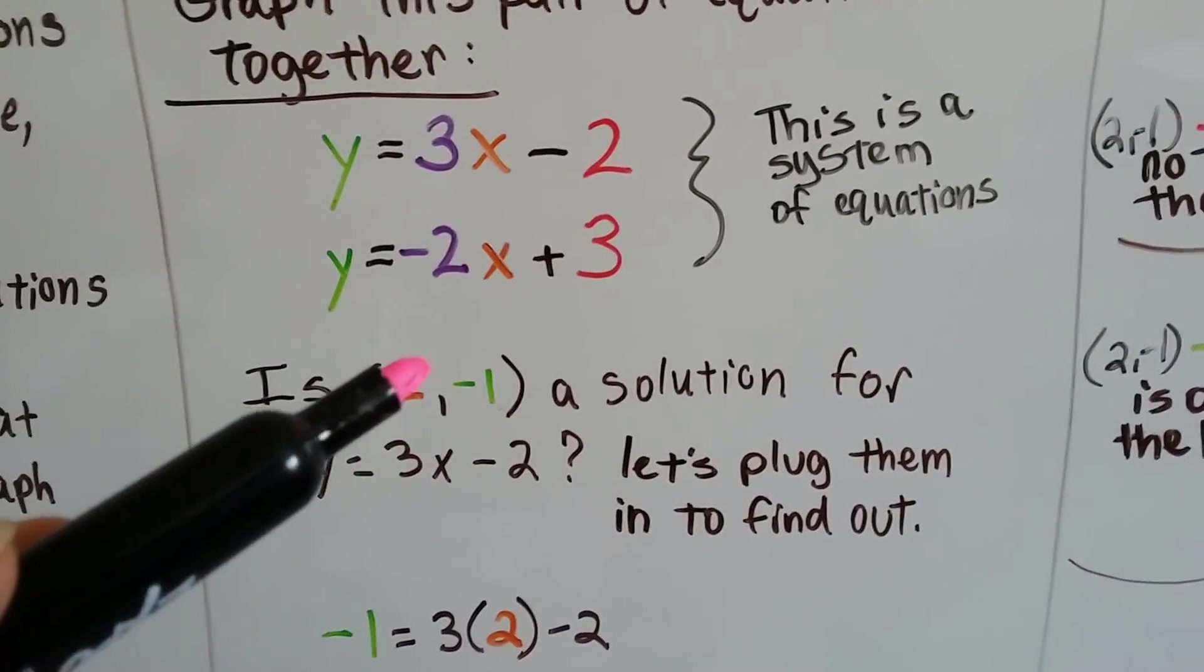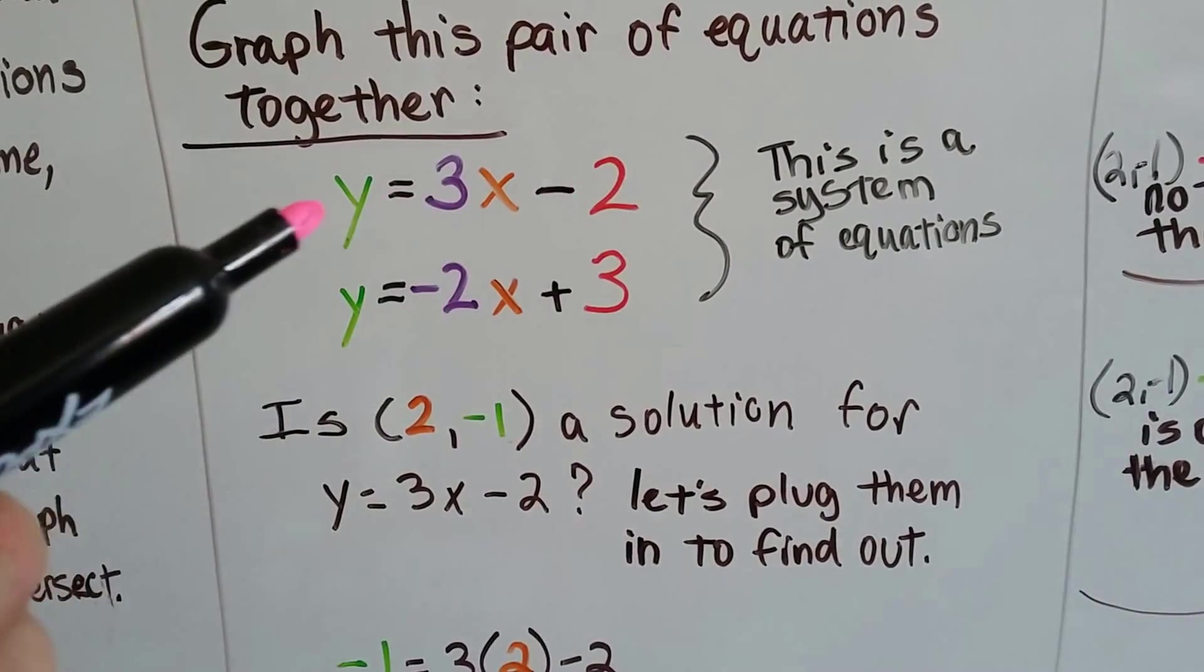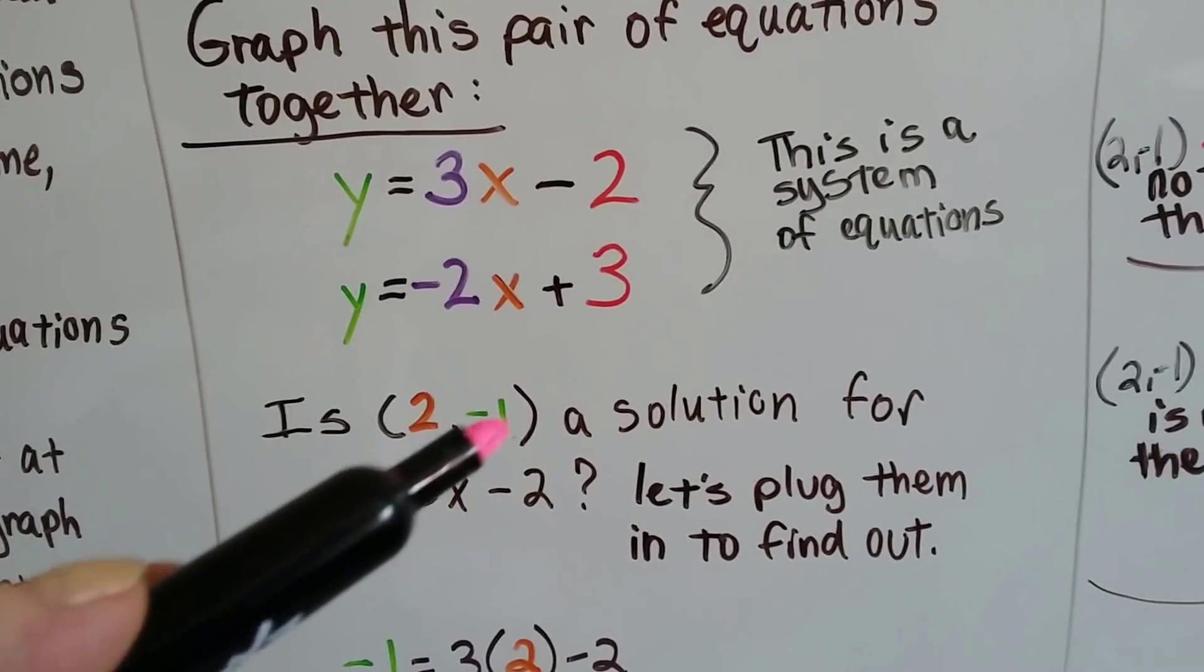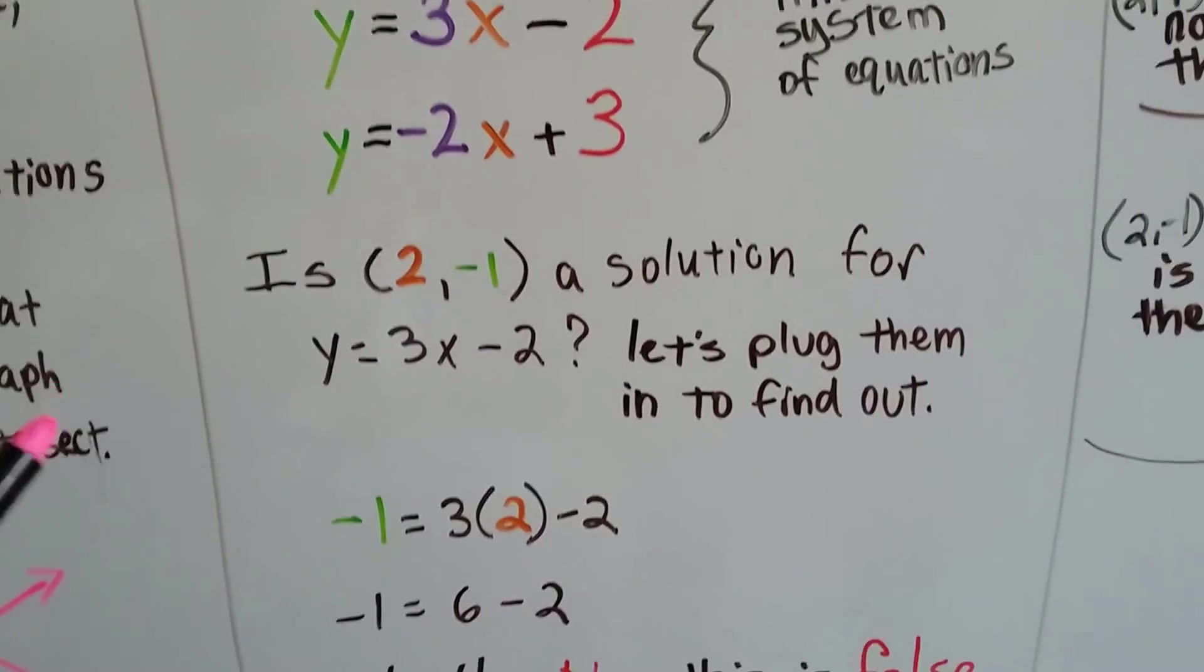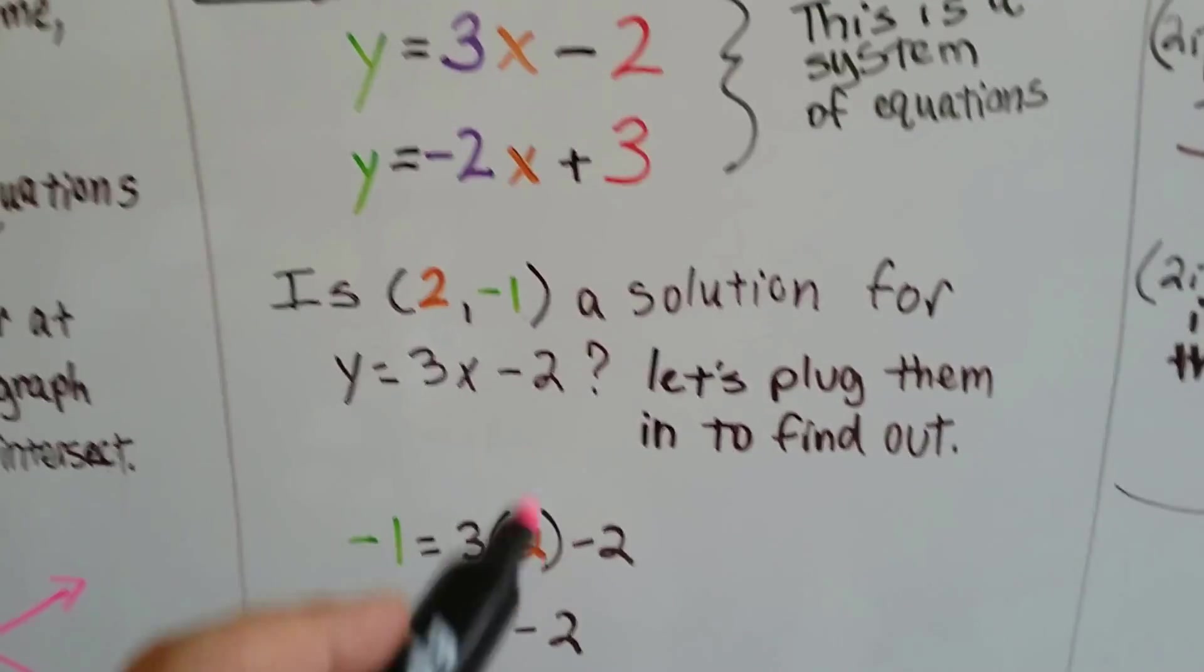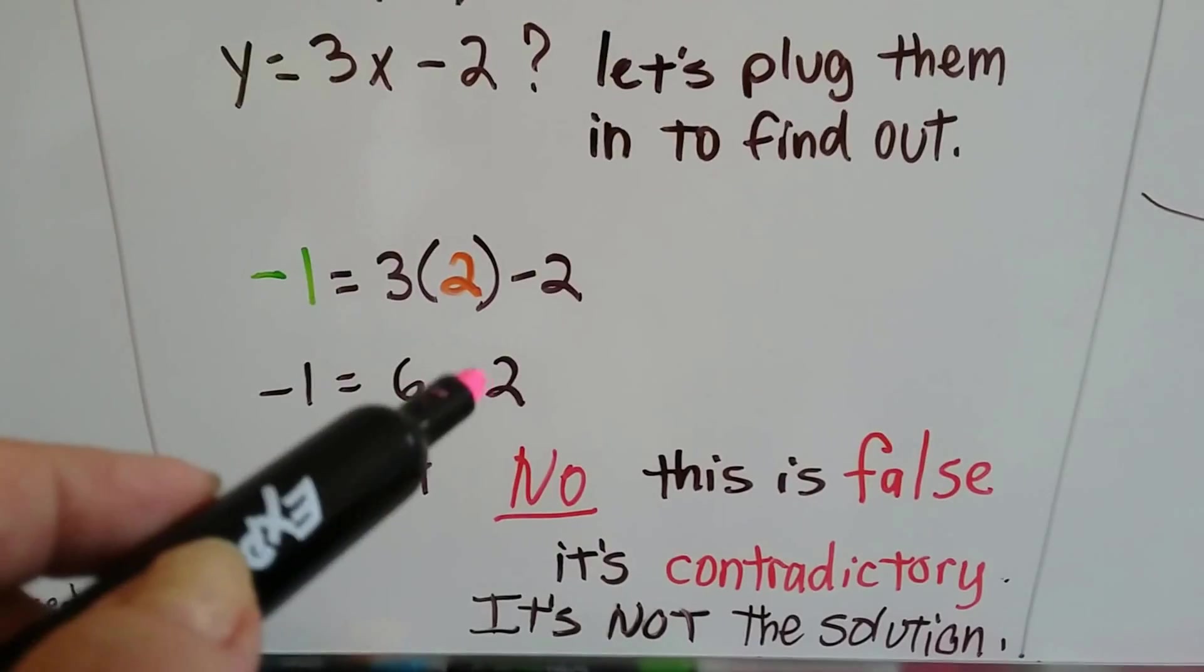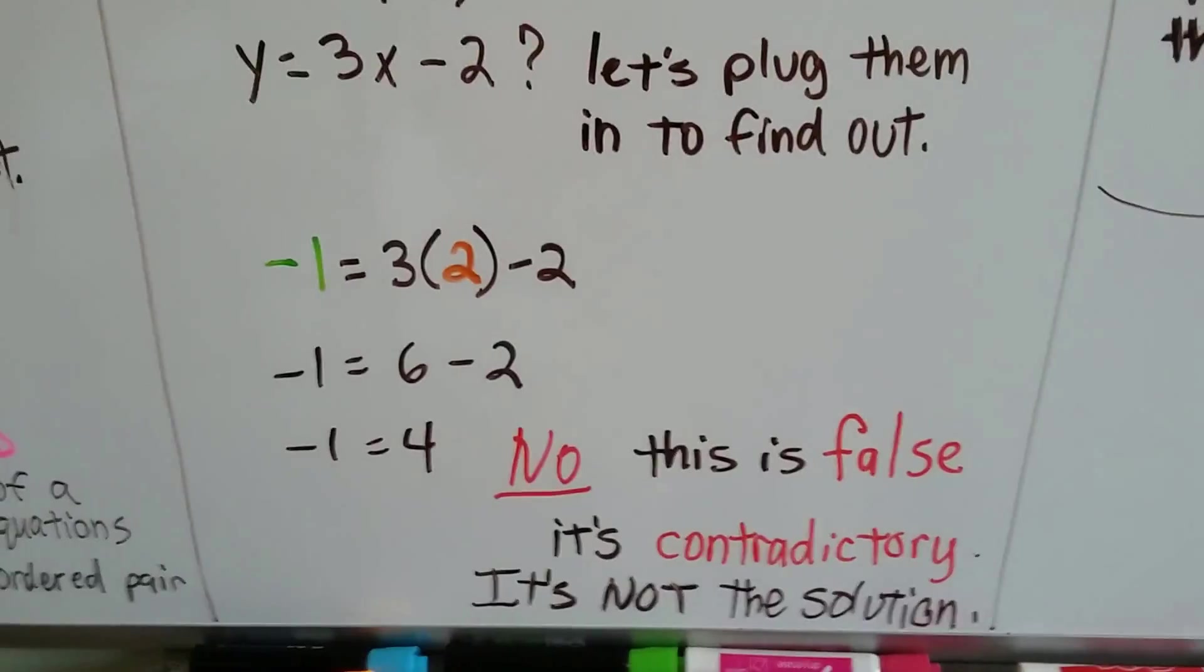And if it asks us, is 2 comma negative 1 a solution for this first equation? y equals 3x minus 2. Can this ordered pair, x and y, 2 and negative 1, be a solution for this equation? We'll just plug the numbers in for x and y and find out. The negative 1 is the y, and the 2 is the x. We plug them in and look at what we get. It's false. 3 times 2 is 6, minus 2, that's 4. Negative 1 doesn't equal 4. So no, this is false. It's not the solution.